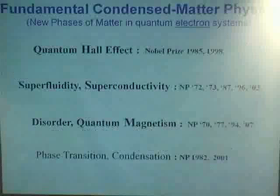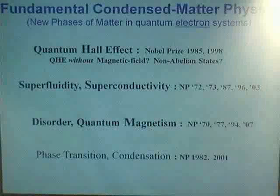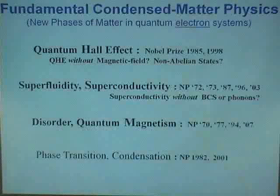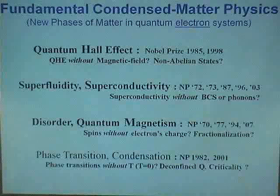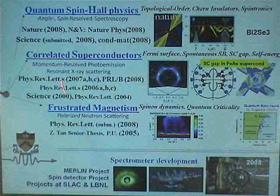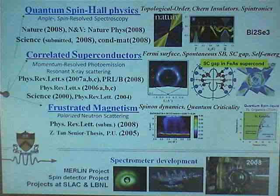Let me map this problem into the global framework of fundamental quantum matter physics. I've taken the liberty to define what is fundamental quantum matter physics: quantum Hall effect, superconductivity, quantum magnetism, phase transitions. The questions that have emerged are: can we get a Hall-like effect without a magnetic field? Can we get non-Abelian physics? Can we get superconductivity without phonons or BCS? Can we get fractionalization in higher dimensions, and can we get deconfined criticality? This is sort of the overview of what I do at Princeton.